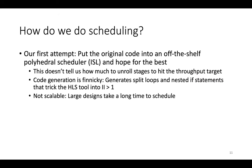So how do we do scheduling? The first attempt on this project was to take the original code, the for loops that were given, toss it into an off-the-shelf polyhedral scheduler — in our case ISL — and just hope that the best possible code comes out, then send that to an HLS tool after optimizing reuse buffers. This actually kind of works for small applications, but it doesn't work that well.